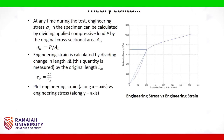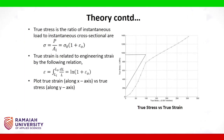At any time during the test, the engineering stress σ₀ in the specimen can be calculated by dividing applied compressive load P by the original cross-sectional area. Engineering strain is calculated by dividing change in length ΔL by the original length L₀. Engineering strain along the x-axis versus engineering stress along the y-axis is plotted, and from the graph we note the compressive strength as engineering stress. True stress is the ratio of instantaneous load to instantaneous cross-sectional area. True strain is related to engineering strain by a standard relation. True strain along the x-axis versus true stress along the y-axis is plotted, and from the graph we note the compressive strength as true stress.